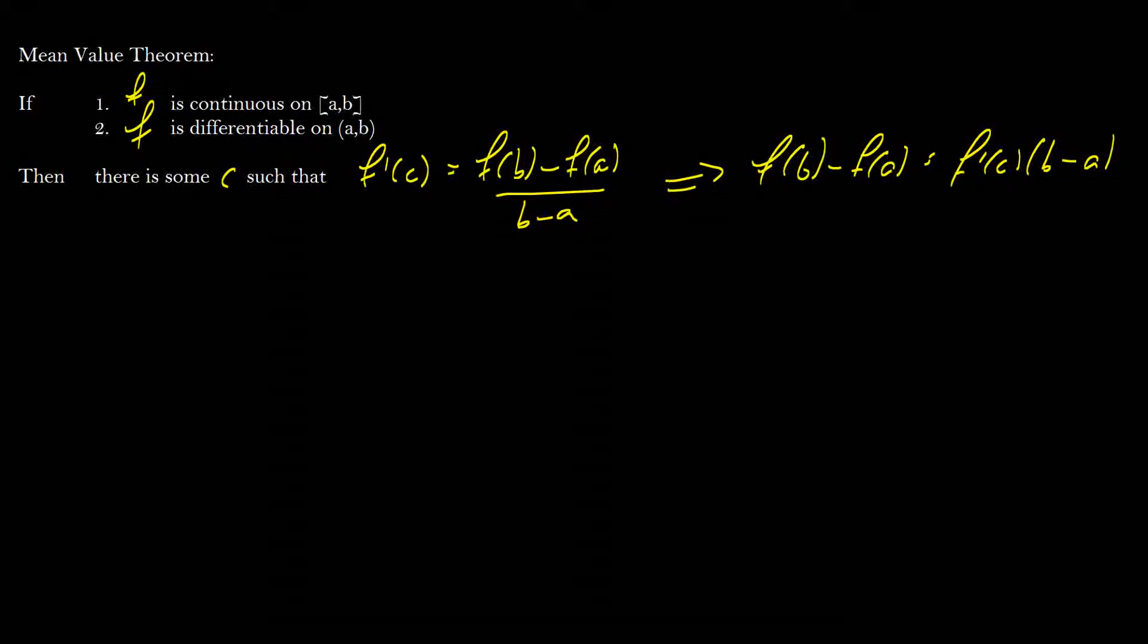What this means is that if we have a function and we have some closed interval a and b, and I'm going to pick a nice function that looks like this, there is going to be some c on this line here where the derivative, so this tangent line here, is equal to the line between f of a and f of b.